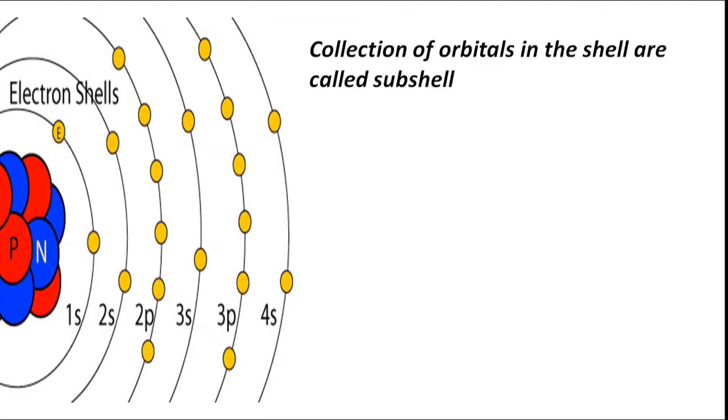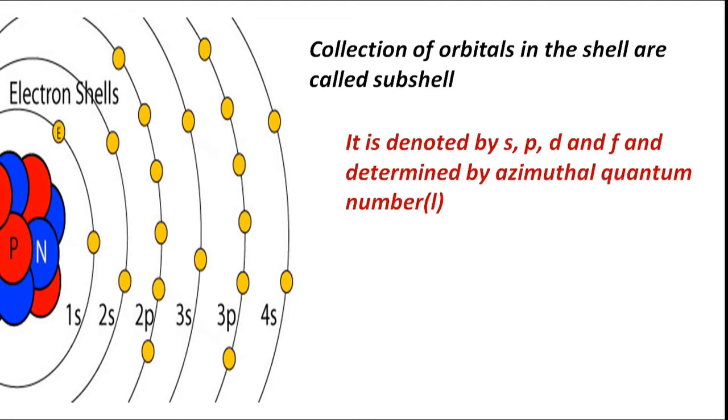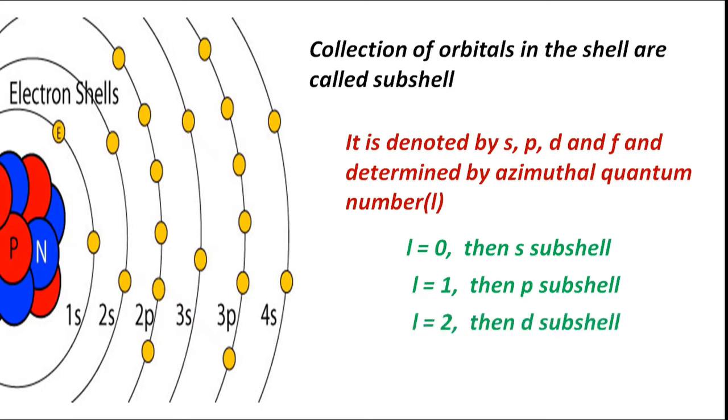Collections of orbitals in the shell are called subshells. It is denoted by S, P, D, and F, and determined by azimuthal quantum number L. If L equals 0, then S subshell. If L equals 1, then P subshell. If L equals 2, then D subshell. If L equals 3, then F subshell.